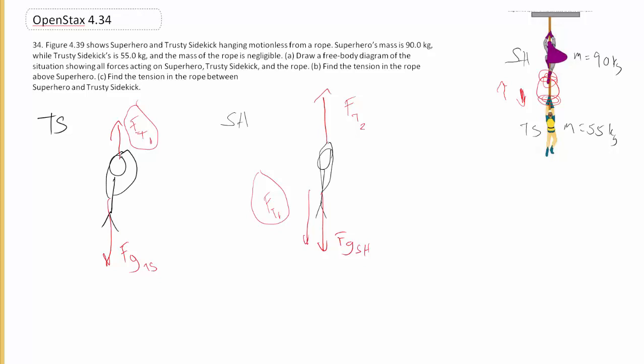So we're trying to find the tension. Let's go ahead and do this problem for part B and C. We're supposed to find the tension in the rope above the superhero. That seems pretty hard. Let's skip to C first. I actually like C as a better one. Let's look at C first. If we look at C, we're just trying to find the tension in the rope between the superhero and the trusty sidekick. That's this rope right here. That's the one that's related to the force of tension one, FT1. Those are the same force that should give us the same answer.